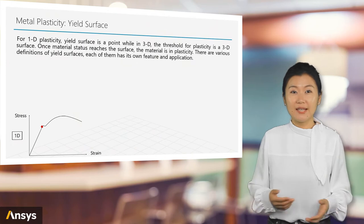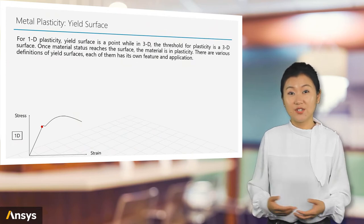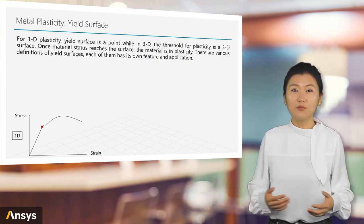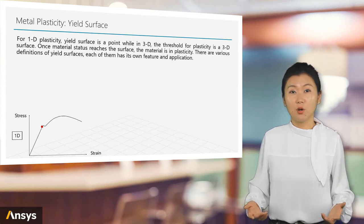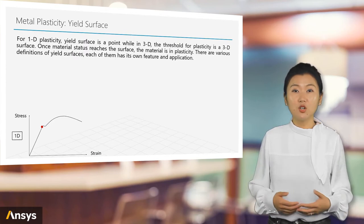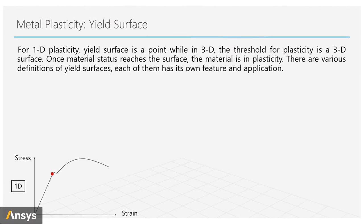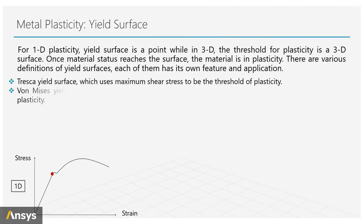We saw that for 1D illustration, plasticity starts from a point as shown here. Now move to 3D space. The stress state of a material becomes a tensor, and the yield point is expanded to become a 3D surface if we view it in principal coordinate system.